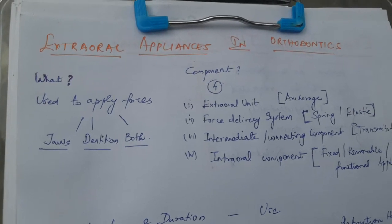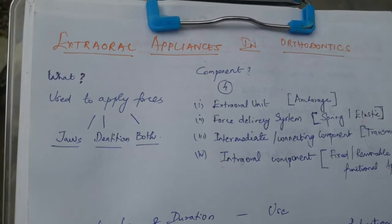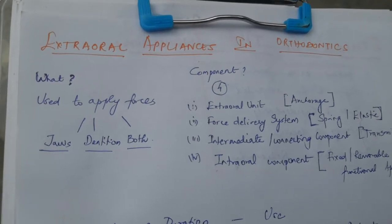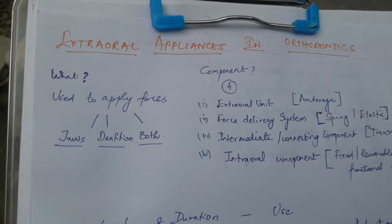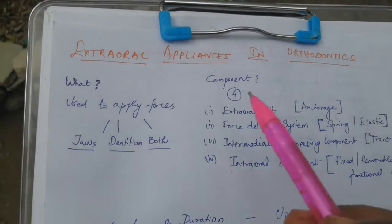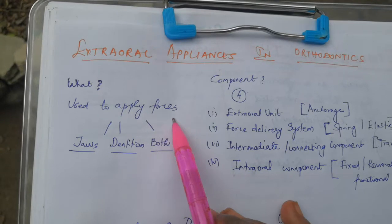This class will be on extraoral appliances in orthodontics. These appliances are used to correct skeletal discrepancies and to a certain extent the alignment of teeth. They will apply a certain amount of force either to the jaw alone, the dentition alone, or both.